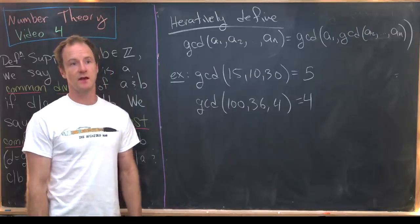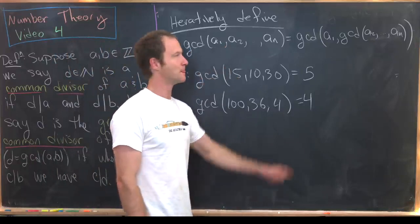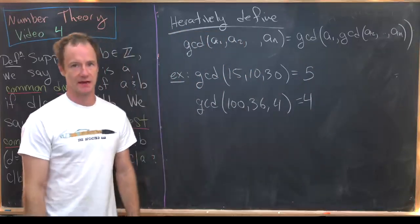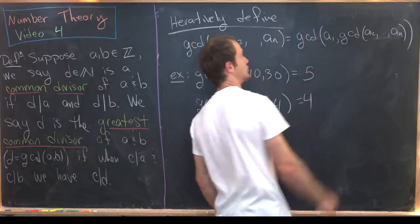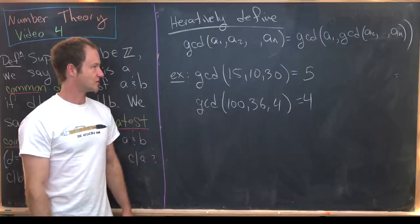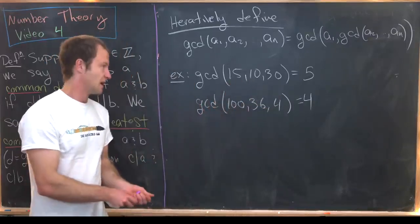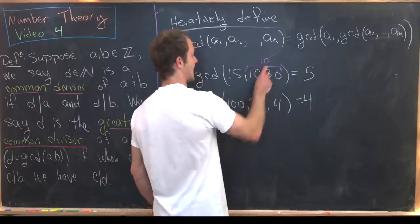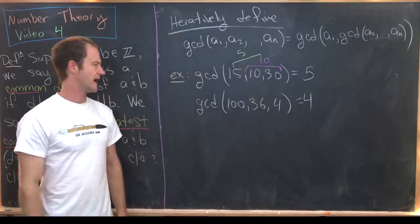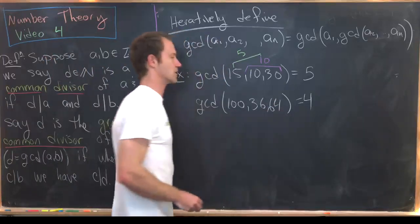We can iteratively define the GCD of more than two numbers: GCD(a₁, a₂, …, aₙ) equals GCD(a₁, GCD(a₂, …, aₙ)). You just layer these GCDs on top of each other. For example, GCD(15, 10, 30): GCD(10, 30)=10 and GCD(15, 10)=5. Similarly, GCD(134, 64) equals four.